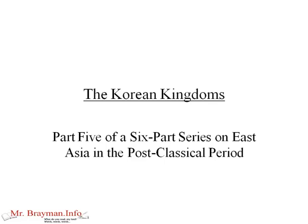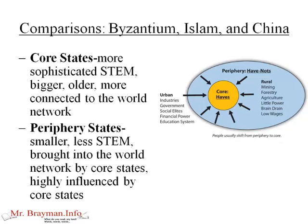This lesson is on the Korean kingdoms, and this is part five of a six-part series on East Asia in the post-classical period. Now you've seen this slide before, so I'm not going to touch too much on it, but the Koreas — the Korean kingdoms — were periphery states for China. Keep this model in mind as we go through this lesson.